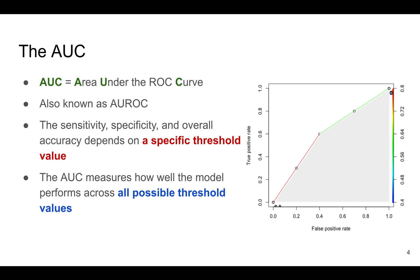So there's a metric called the AUC, which means the area under the ROC curve. Sometimes we use, some other people will use the acronym AUROC, but it's the same thing, just by a different name. So why this metric is important is because the sensitivity or the specificity or the overall accuracy of the classifier depends on which threshold value you choose.